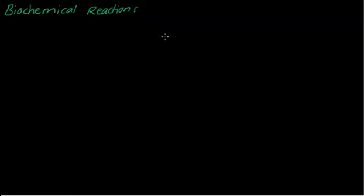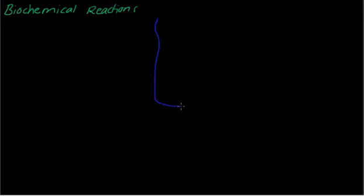Hi guys, today I'm going to show you some biochemical reactions in biochemistry. So first you have this y-axis and x-axis. The y-axis is the velocity, usually millimole per second, and the x-axis is substrate concentration, usually millimole.